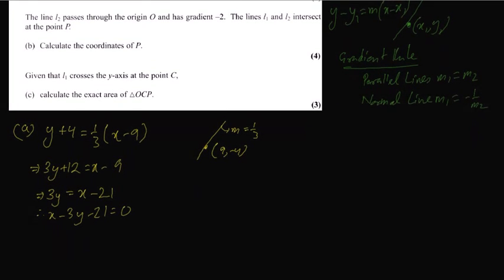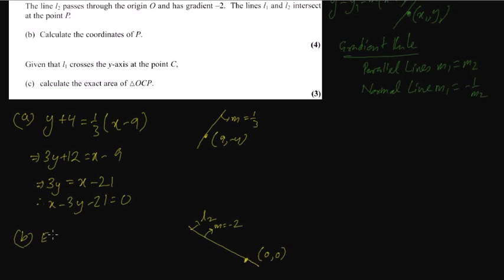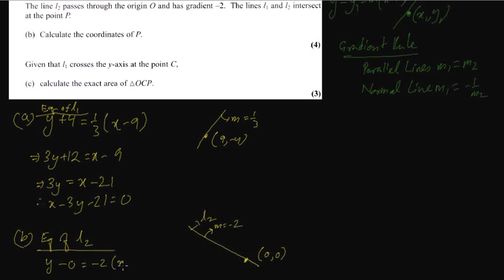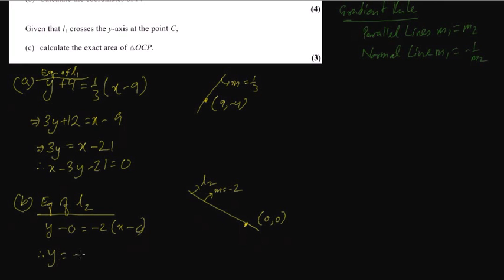Question number B — they are talking about another line, L2. L2 passes through the origin, so that means (0, 0), and it has a gradient of minus 2. So m equals minus 2, meaning it is falling. The equation of L2 is: y minus 0 equals minus 2 times x minus 0, which gives y equals minus 2x.